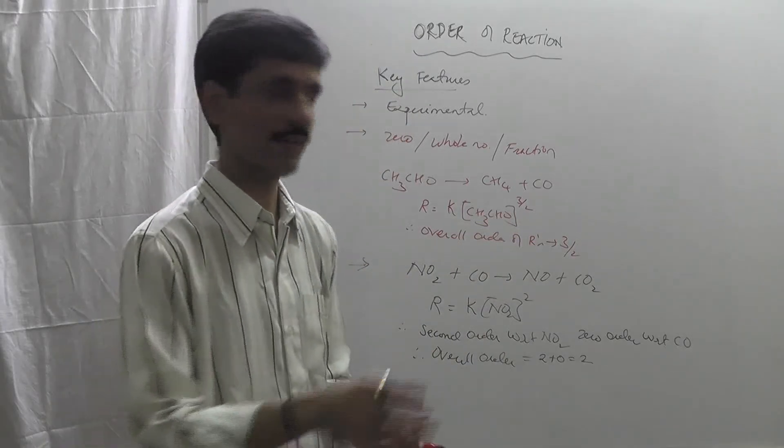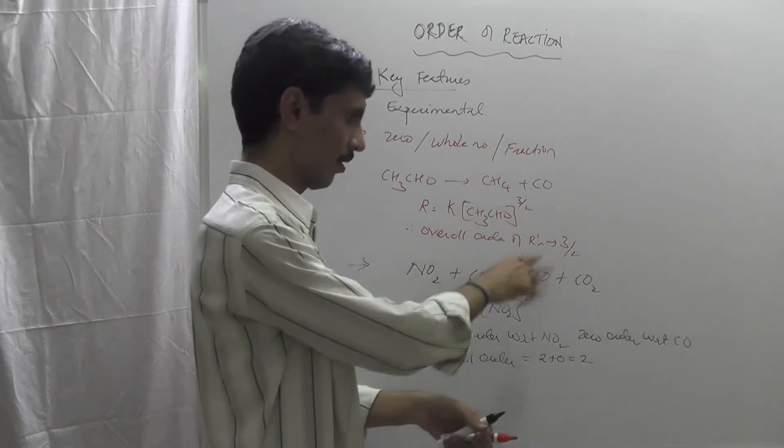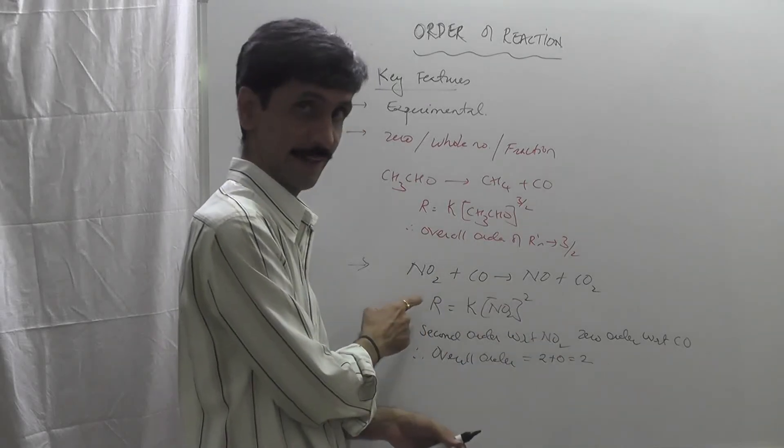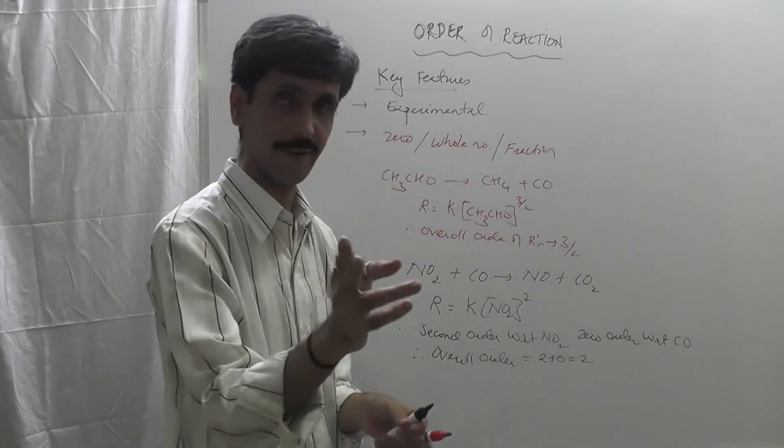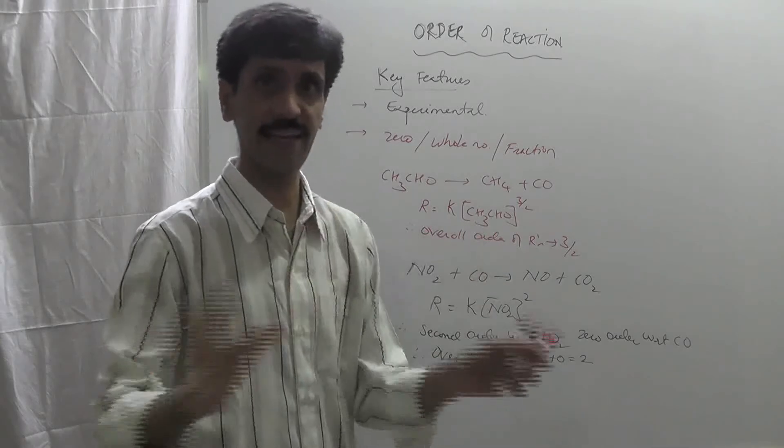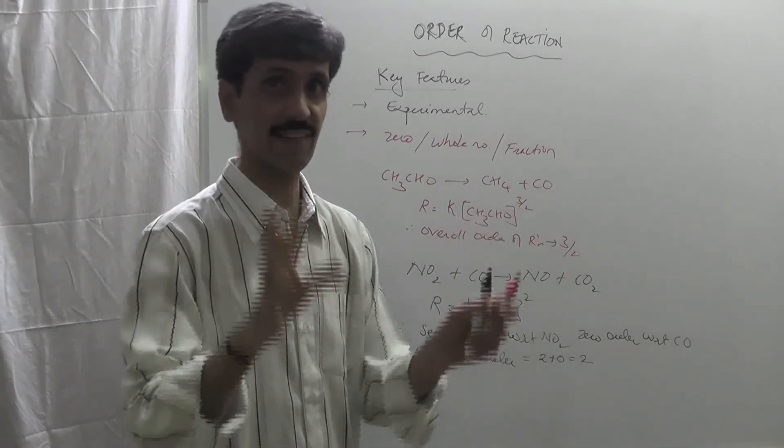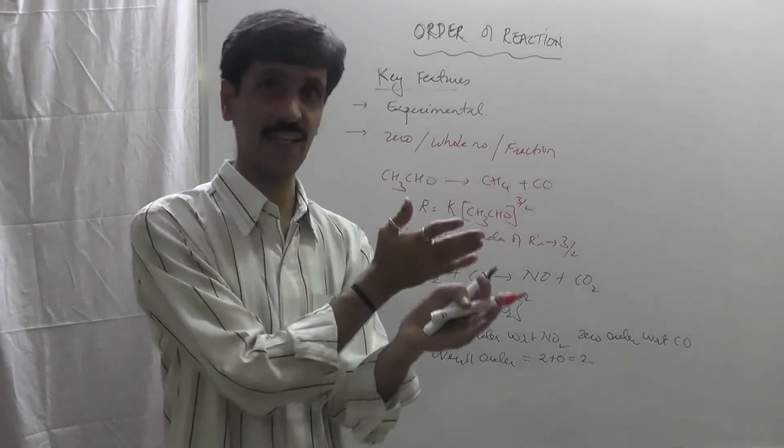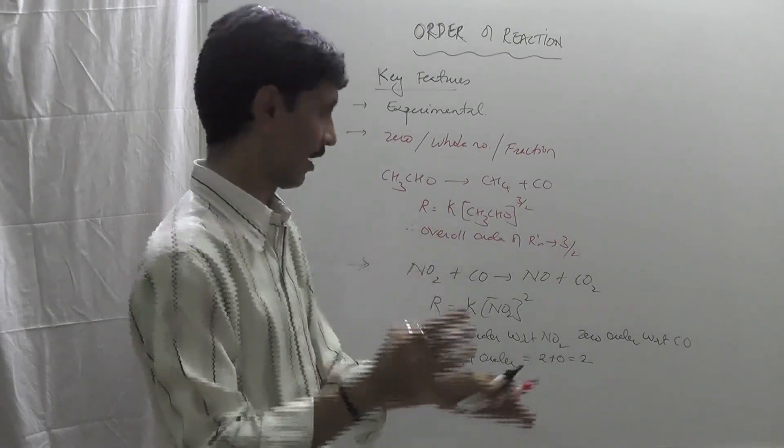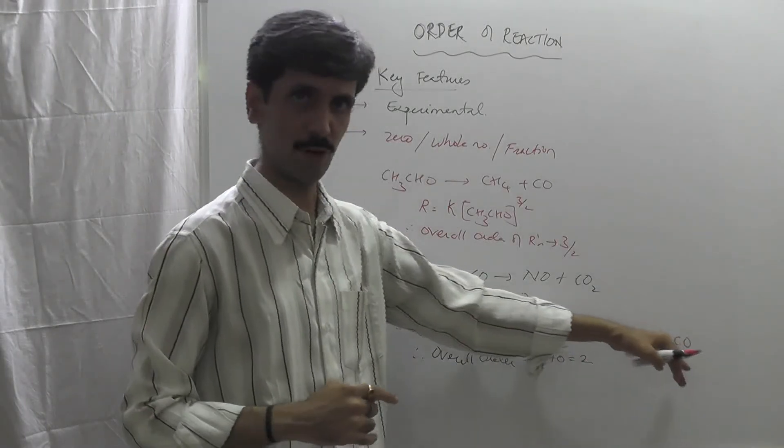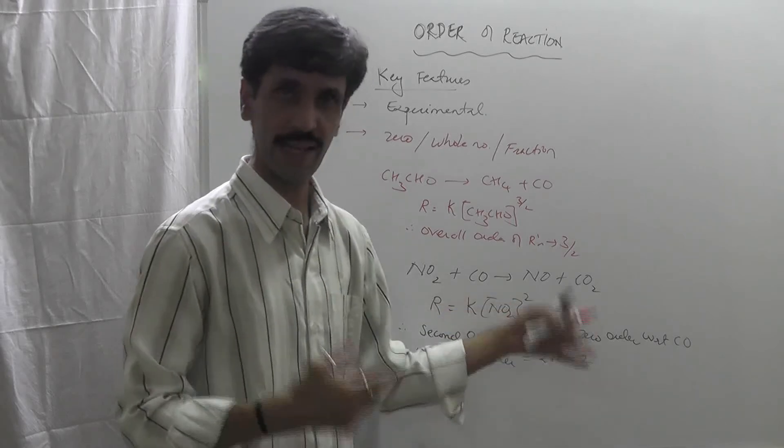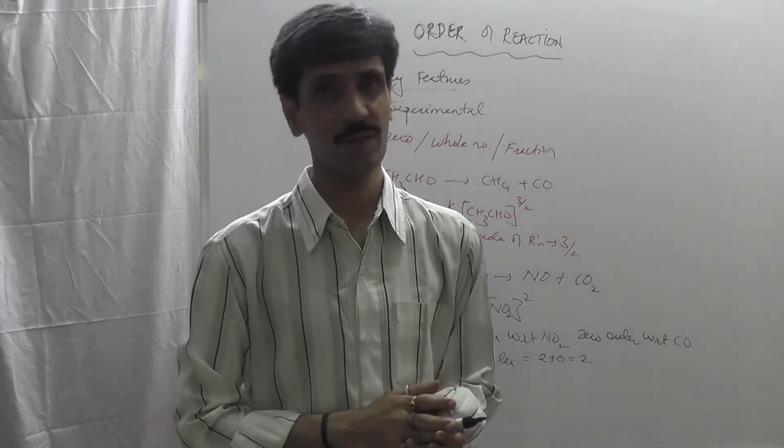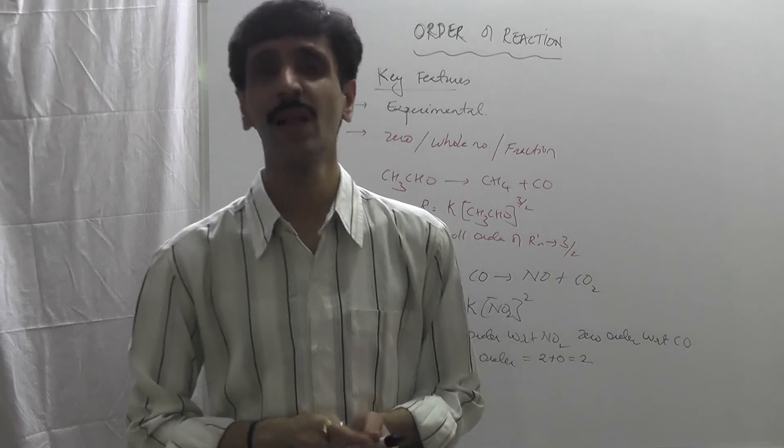So once again I repeat: NO2 plus CO gives you NO plus CO2. We found the rate law expression, and we got this. This is experimental. And in this rate law expression CO is not there. That means the concentration of the carbon monoxide is not at all affecting the rate of the reaction. So it is zero order with respect to carbon monoxide and second order with respect to NO2. And therefore we say the overall order is going to be second order. You need to remember this.